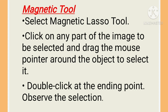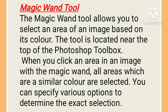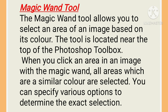Let's see how to use the magnetic lasso tool. First, select the magnetic lasso tool. Click on any part of the image to be selected and drag the mouse pointer around the object to select it. Double-click at the ending point and observe the selection. In this image here, we can see the use of the magnetic lasso tool.